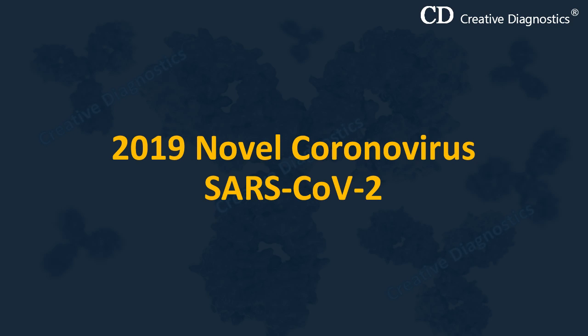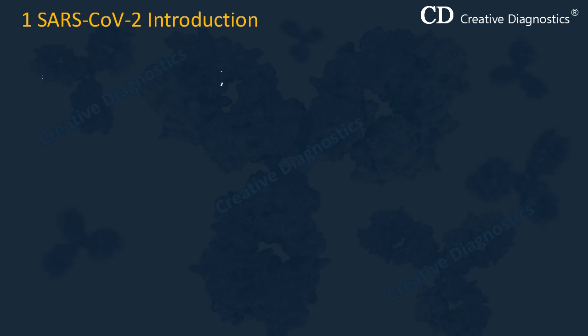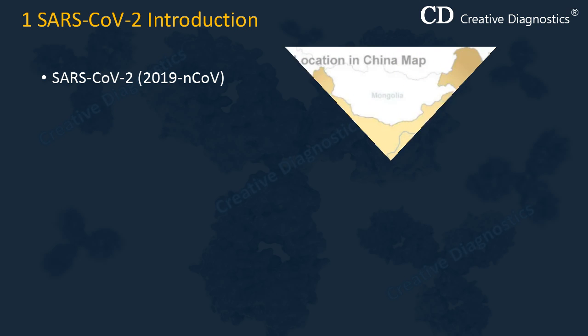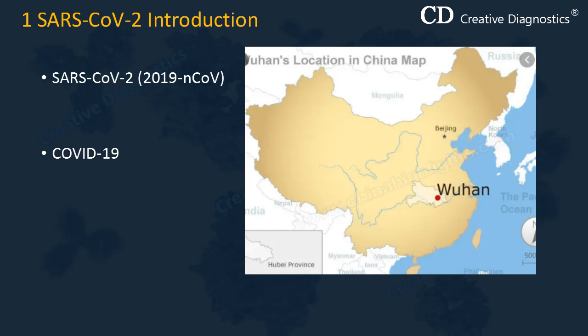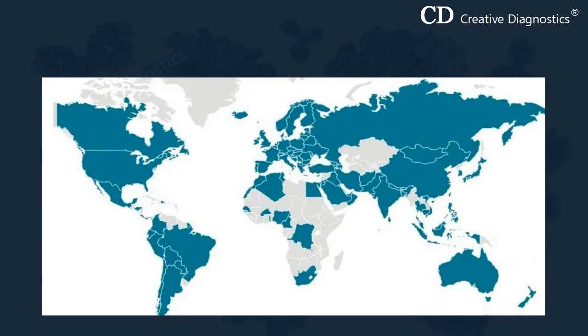In this video we'll be discussing the 2019 novel coronavirus SARS-CoV-2. SARS-CoV-2 is a new type of coronavirus identified as the cause of an outbreak of respiratory illness first detected in Wuhan, China. Those affected may develop a fever, dry cough, fatigue, and shortness of breath. COVID-19 is the disease caused by SARS-CoV-2, and it is affecting 110 countries and territories around the world.